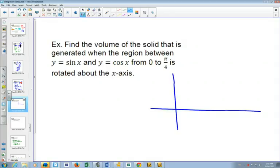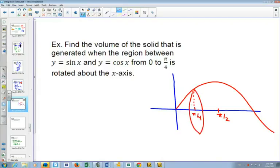If we draw y equals sine x in red from 0, we'll just keep it going. But we're only looking, and this of course would be π over 2 here. We're looking only up to π over 4.